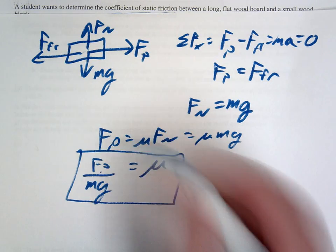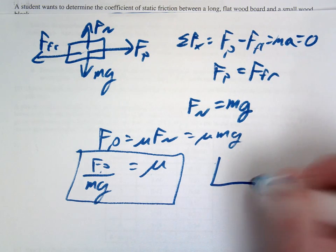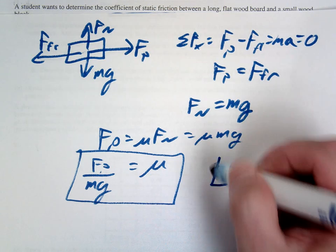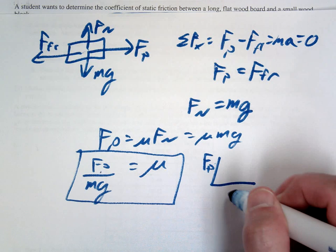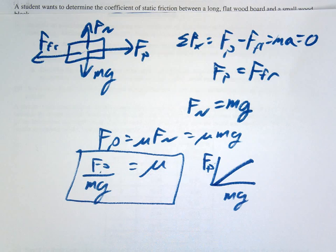There you go. So that would give us our coefficient of friction. By the way, if you want to, you could talk about making a graph of F pull divided by MG. And then you would have a nice slope that would tell you your coefficient.